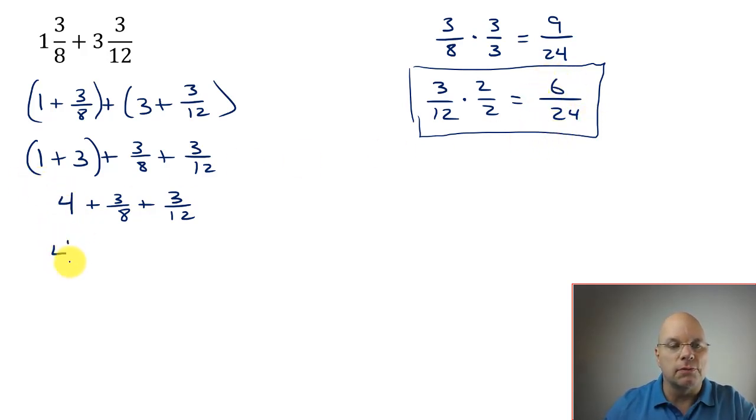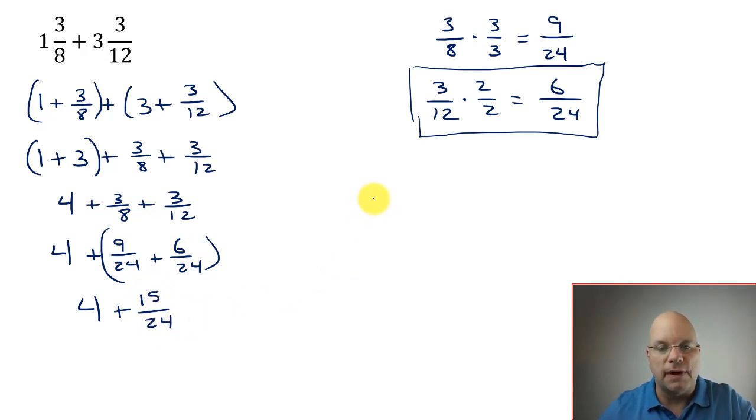So let's substitute. We said three-eighths was equal to nine twenty-fourths. And three-twelfths was equal to six twenty-fourths. Now I can combine these. Now I have like terms. So I have four and nine and six is fifteen. Four and fifteen twenty-fourths. Now do fifteen and twenty-fourths share a common factor? They do. They share a common factor of three.